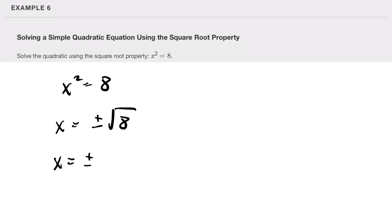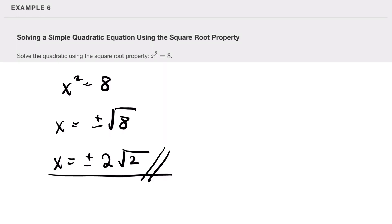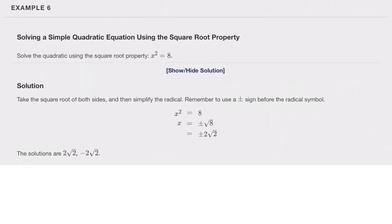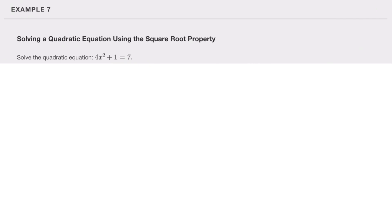The square root of 8 is the square root of 4 times 2, which is 2 times the square root of 2. So x equals plus or minus 2 root 2.